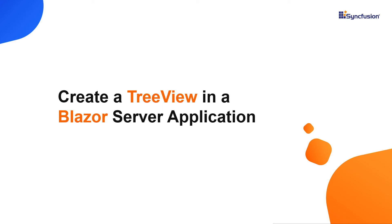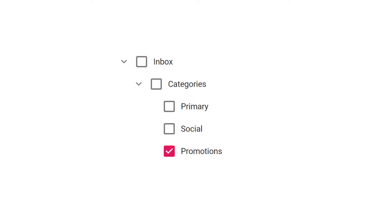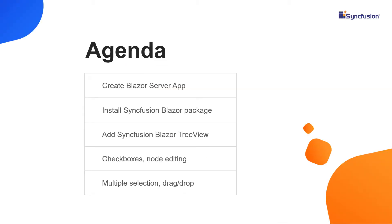Hi everyone, welcome to this video on getting started with the Syncfusion TreeView component in a Blazor server application. TreeViews are used to display the hierarchical relationships among data in a tree structure. In this video, I will explain how to add the Syncfusion Blazor TreeView component with the required data to the Blazor server application. After creating the tree view, I will add features to it like checkboxes, node editing, multiple selection and drag and drop.